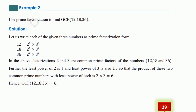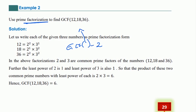Use prime factorization to find the greatest common factor of 12, 18, and 36. The prime factorization gives us 2 to the power of two times 3 to the power of one for 12.